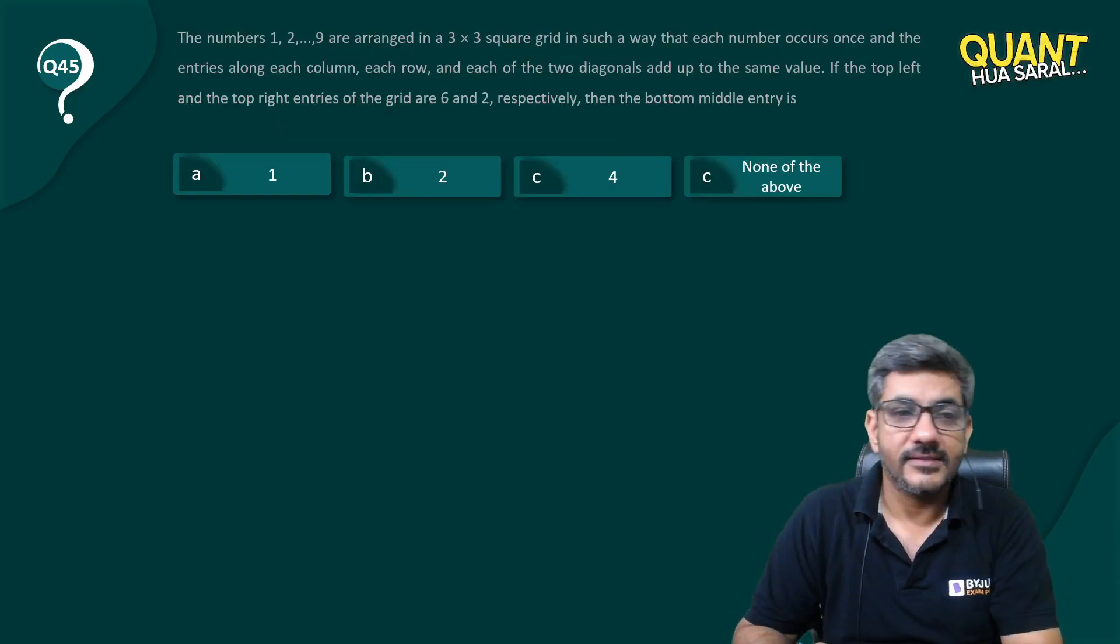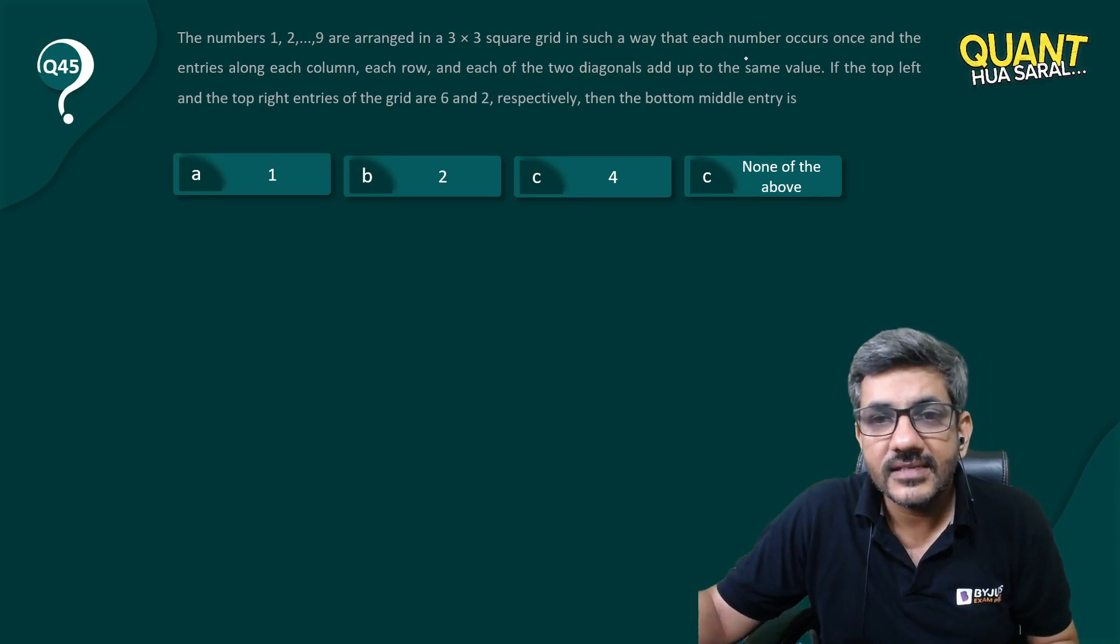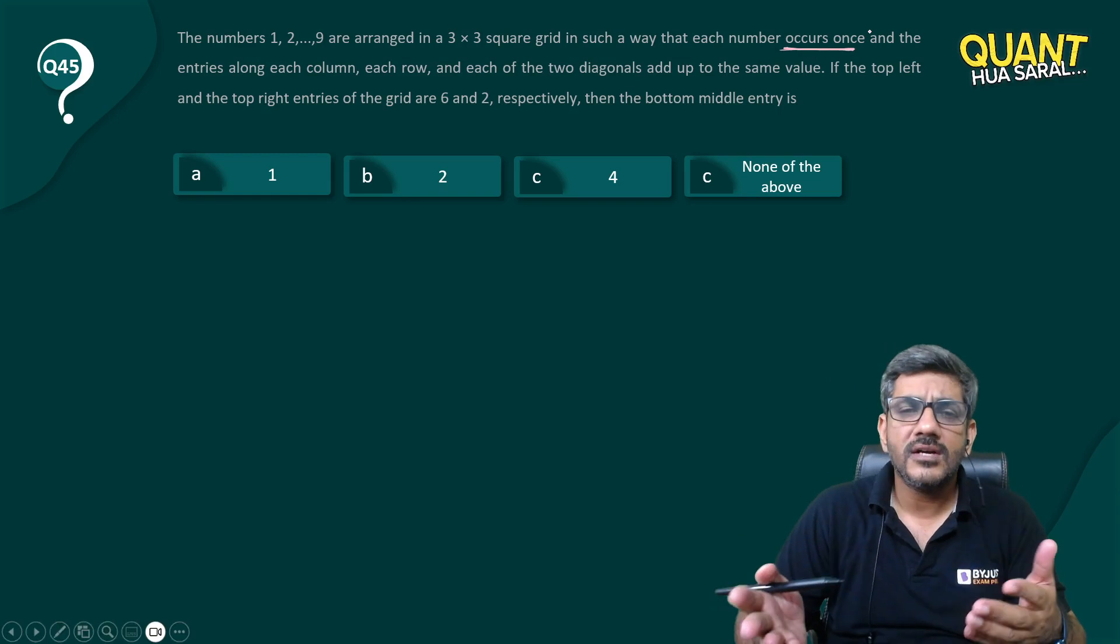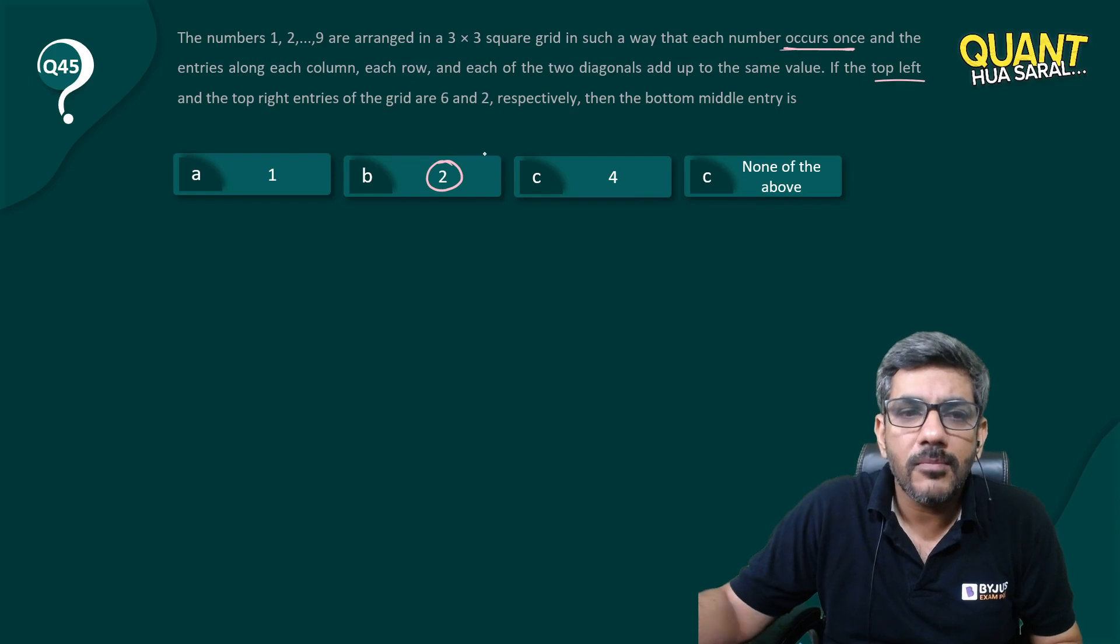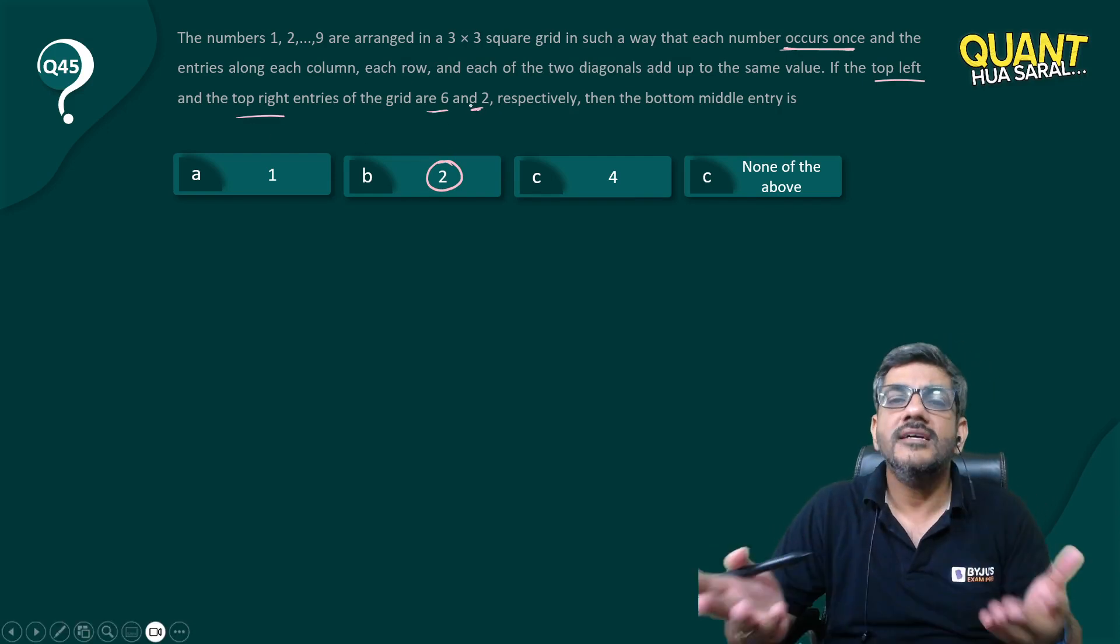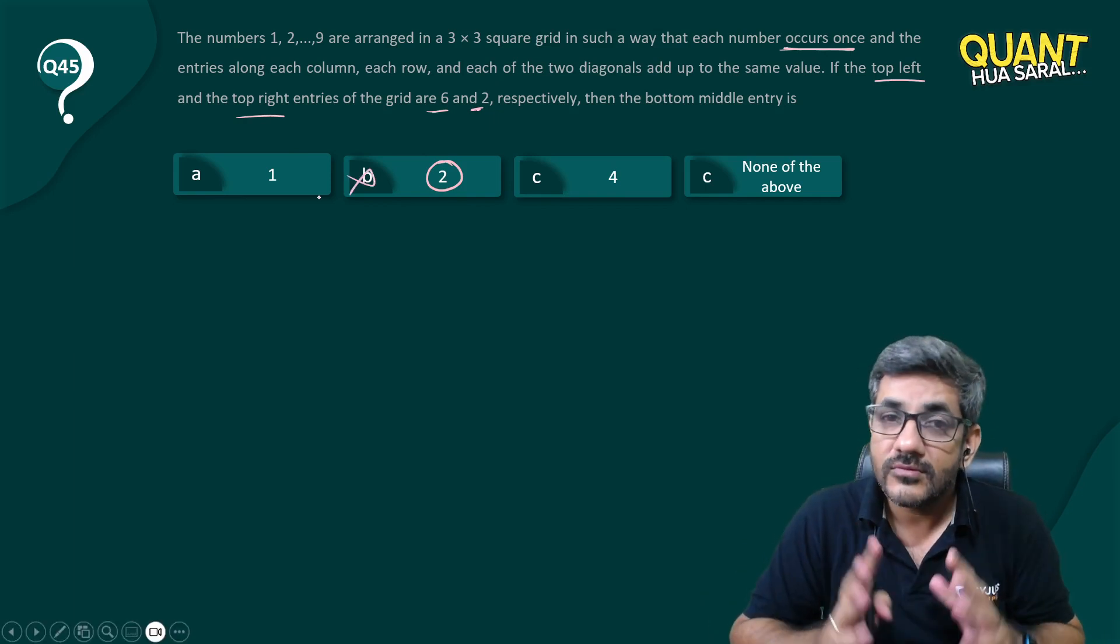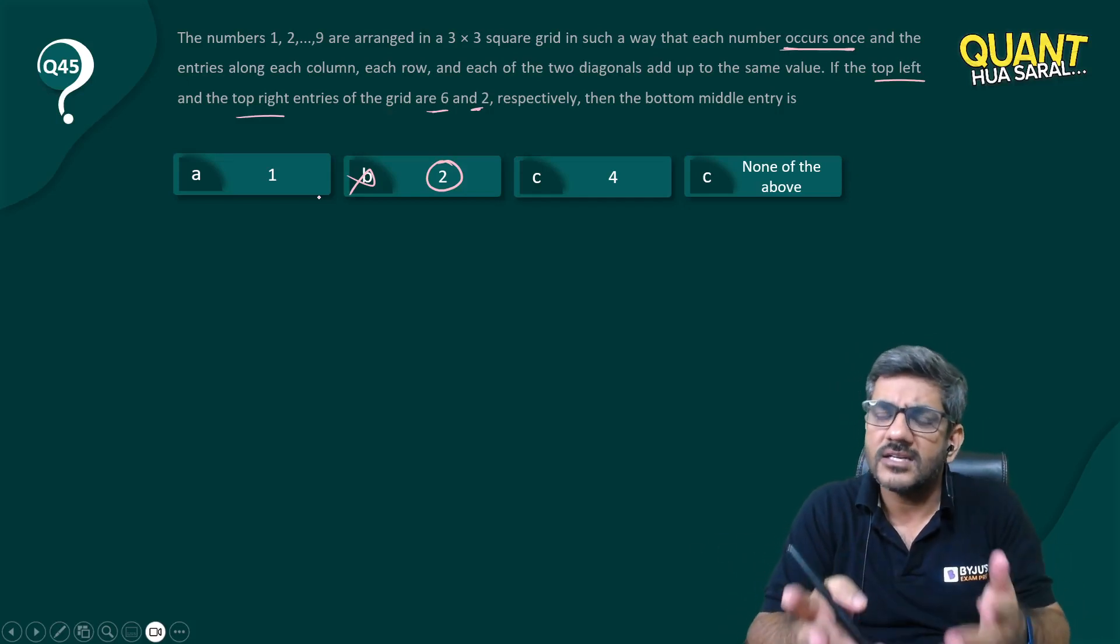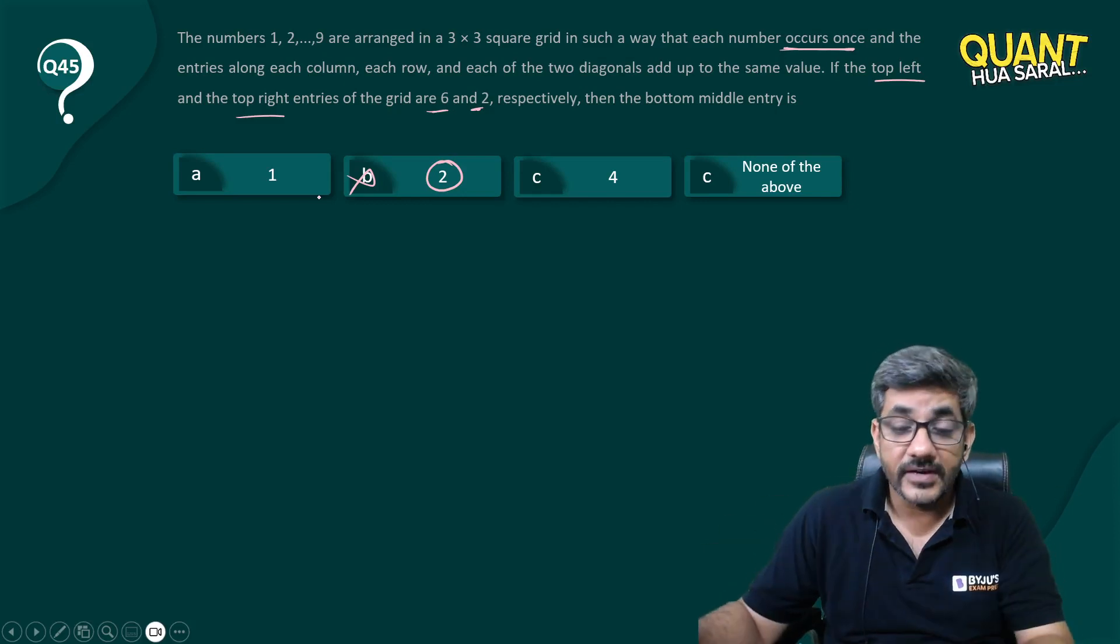Okay this is what the question is asking. So first of all if I look at this information it says each number occurs once. So I first of all did not understand what is the point of giving 2 as an option. When you are already telling the top left and top right entries are 6 and 2. So how can any other entry be 2? Anyways that option is ruled out. Possibly they want you just to be smart enough to straight away eliminate an option. Now we are left with 1 and 4. What next?